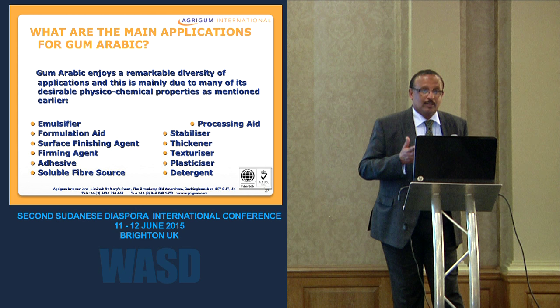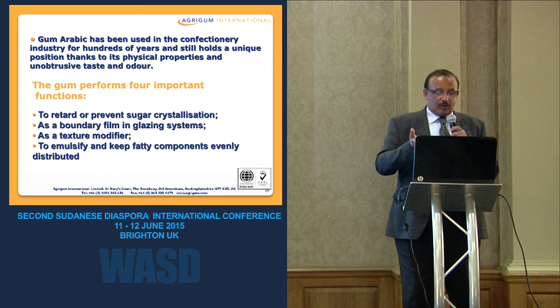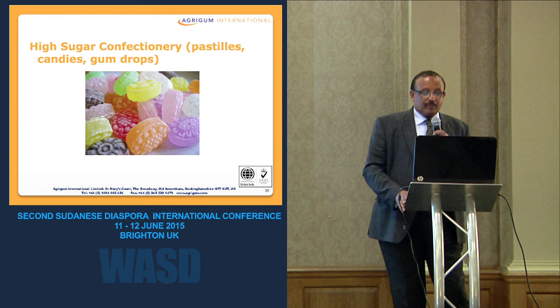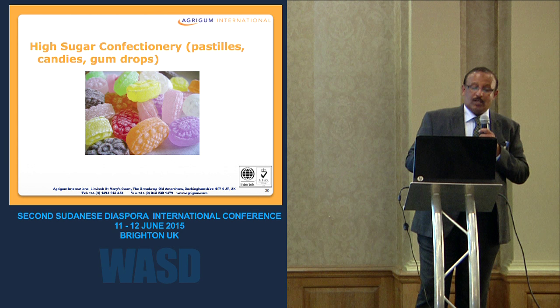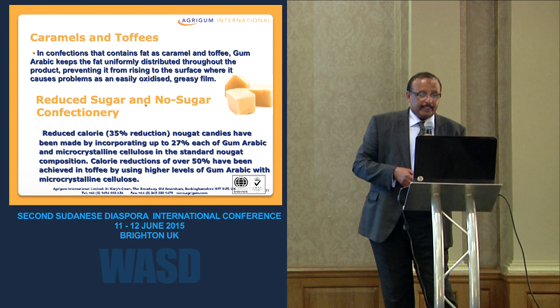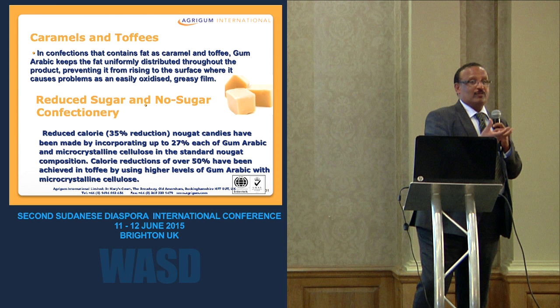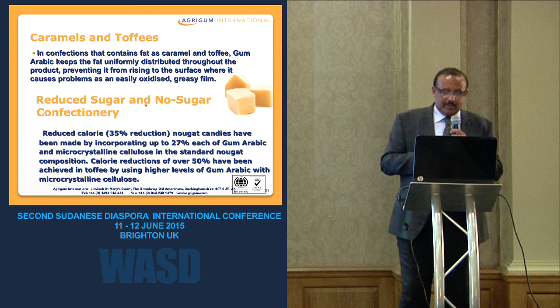There is a wide range of applications of the gum due to its many desirable physicochemical properties. In confectionery, it prevents sugar crystallization, provides a bodying and glazing system, and emulsifies fatty components. In high-sugar confectionery like pastel candies it is used as a bulking agent. In toffee it is used as an emulsifier, and in reduced-sugar and non-sugar confectionery, gum Arabic provides bulking and texture to replace what is lost when sugar is removed.